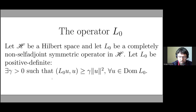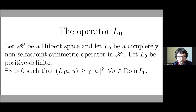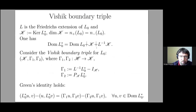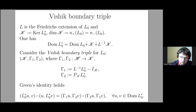The setting is becoming standard. We consider a symmetric operator L0 in a Hilbert space H, which is completely non-self-adjoint and positive definite. For such operators, it is known there is a Visek decomposition. The domain of the adjoint operator can be decomposed into a sum of three terms involving the kernel of this adjoint operator K. Since the operator is positive definite, the deficiency indices are the same and coincide with the dimension of this kernel.